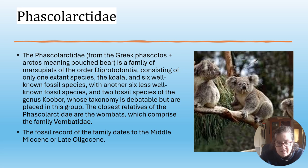Phascolarctidae, from the Greek meaning 'pouch bear', is a family of marsupials of the order Diprotodontia, consisting of only one extant species - the koala - and six well-known fossil species, with other less well-known fossil species and two fossil species of the genus Koobor whose taxonomy is debatable. The closest living relatives are wombats, which comprise the family Vombatidae, and the record of this family dates to the Middle Miocene or Late Oligocene.